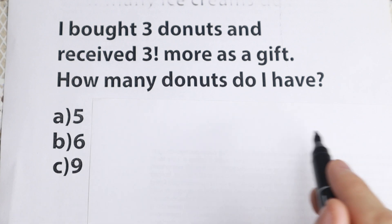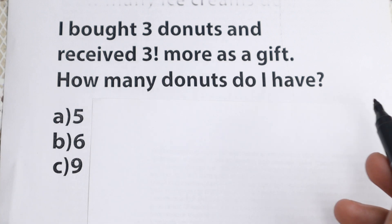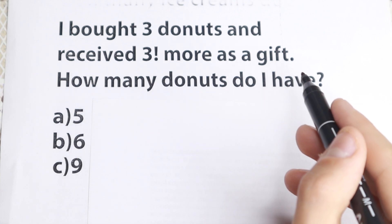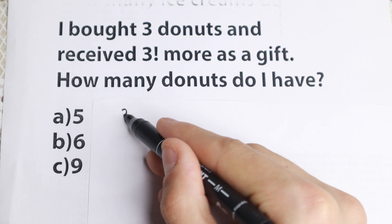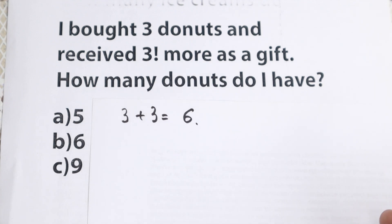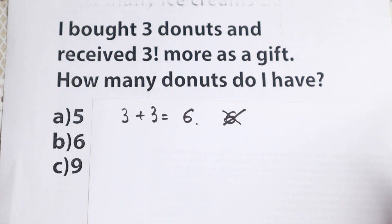And for those who think that the answer is six, it looks like six but six is absolutely incorrect. Because if we read this, I bought three donuts and I received three more as a gift. So it looks like three plus three equal to six. Okay, it looked like our answer but in this book where I found this question, six is incorrect. Why is this incorrect?